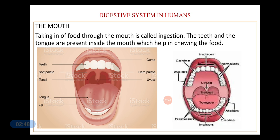Based on their different shapes and functions, human teeth are divided into four kinds. The first are the incisors — the four front teeth at the middle of each jaw. They are chisel-shaped and help in biting and cutting food. Just beside the incisors we have the canines. There are four canines, two on each jaw, and they are used for tearing food as they are slightly pointed.